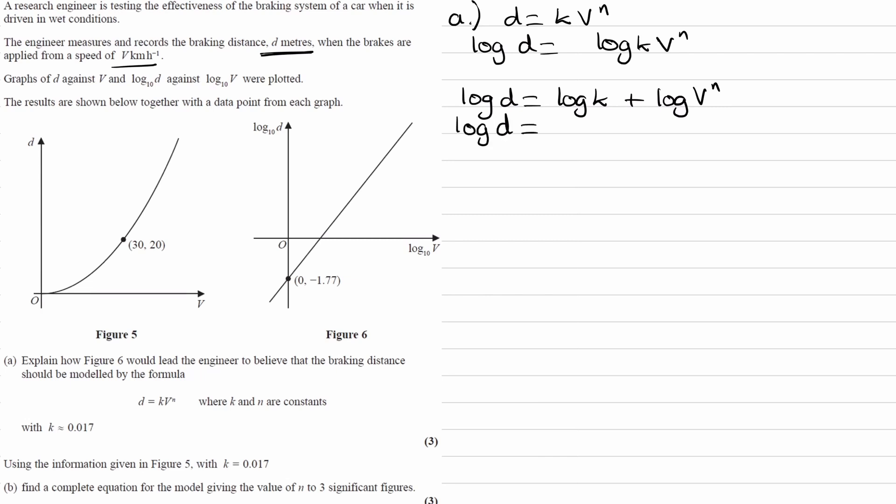And then we can use the power law. Actually, I'm going to change the order of this as well. I'm going to bring this over here, so we end up with n log v, using the power law, bringing the power down, plus log k. And if you look at what we have in that equation and compare it to the graph, this is y, this is x, so this is in the form of y equals mx plus c, where your gradient is n and your y-intercept is c.